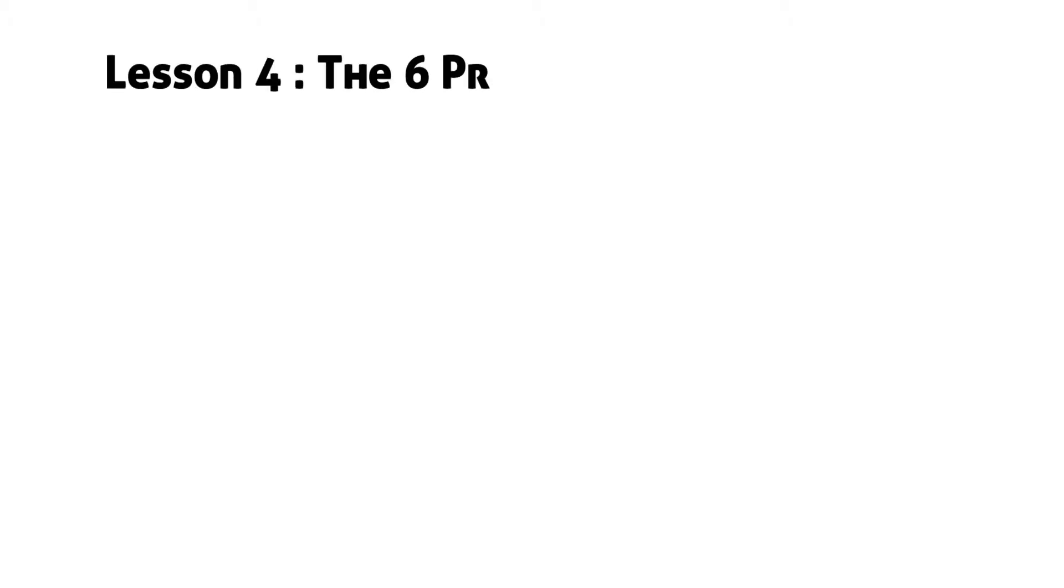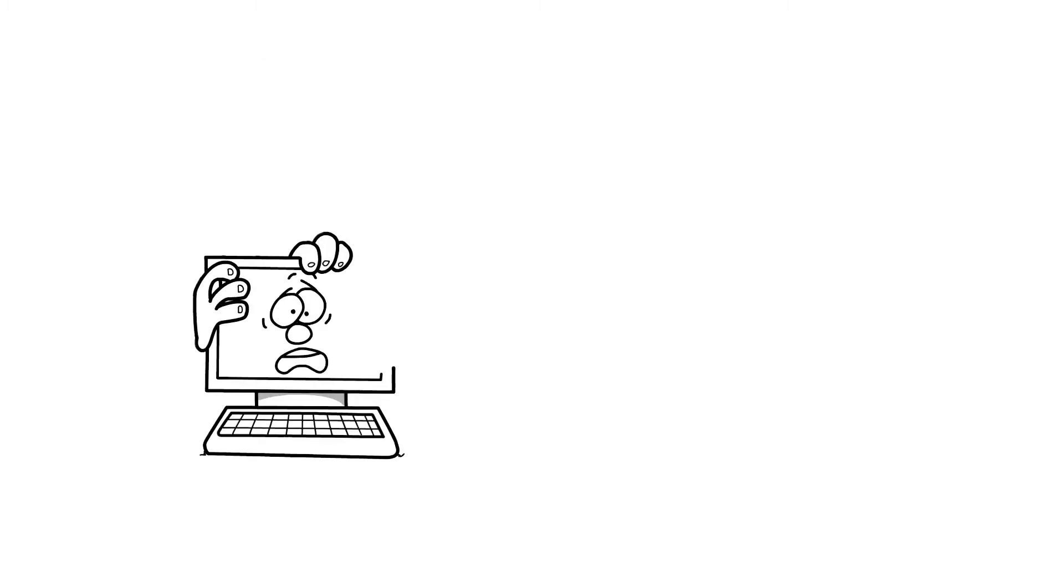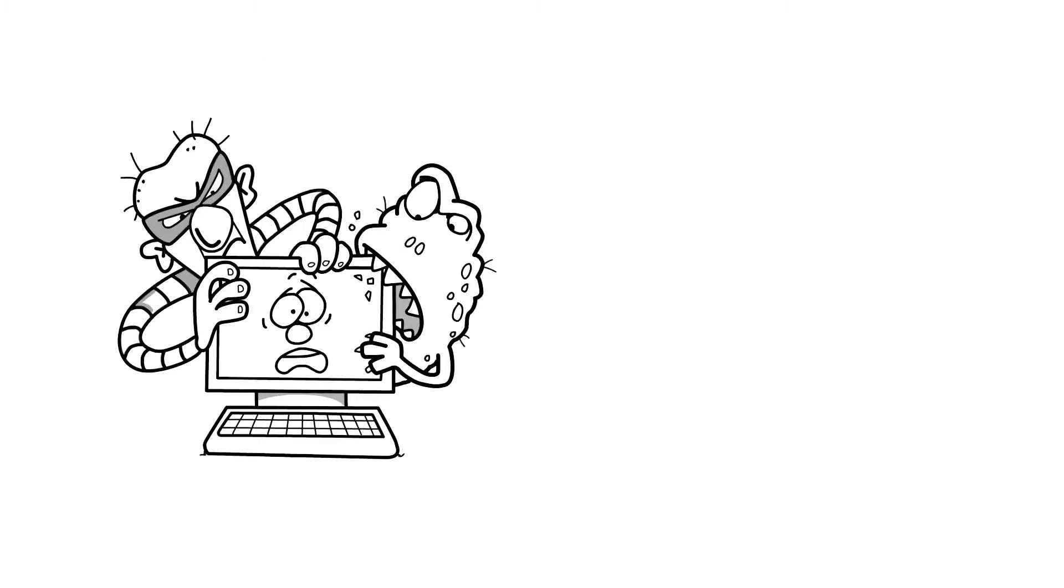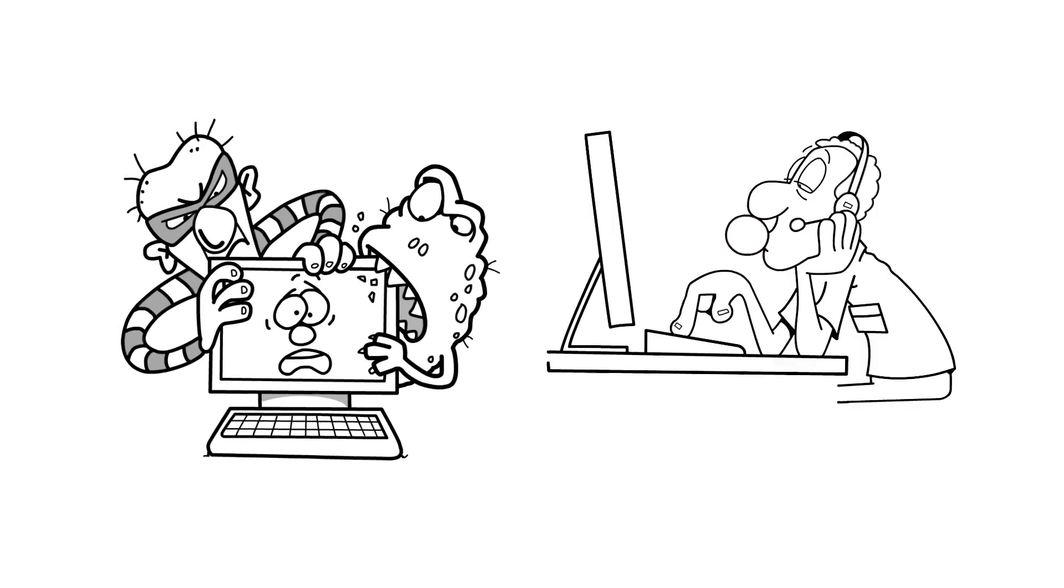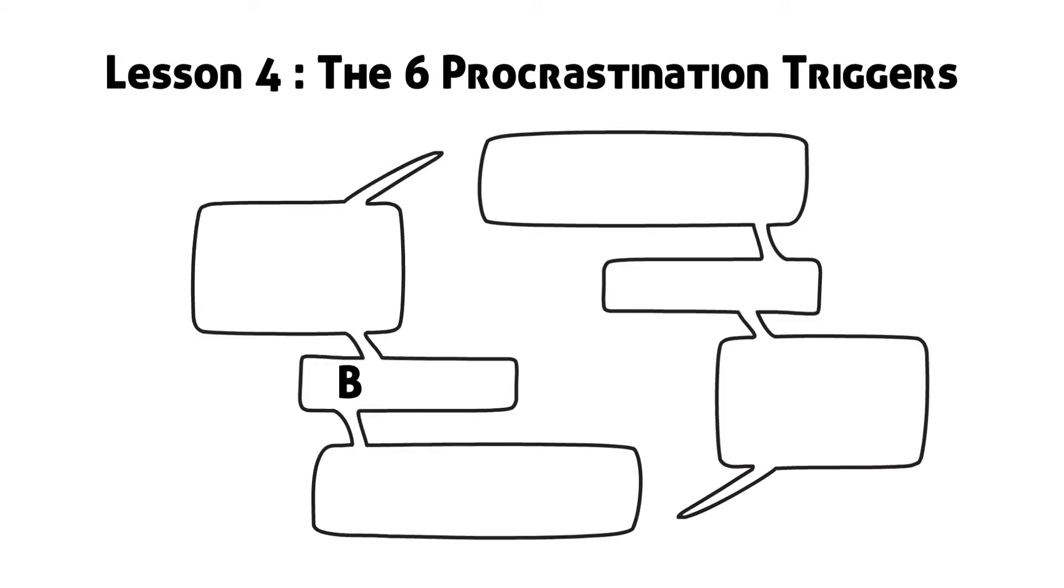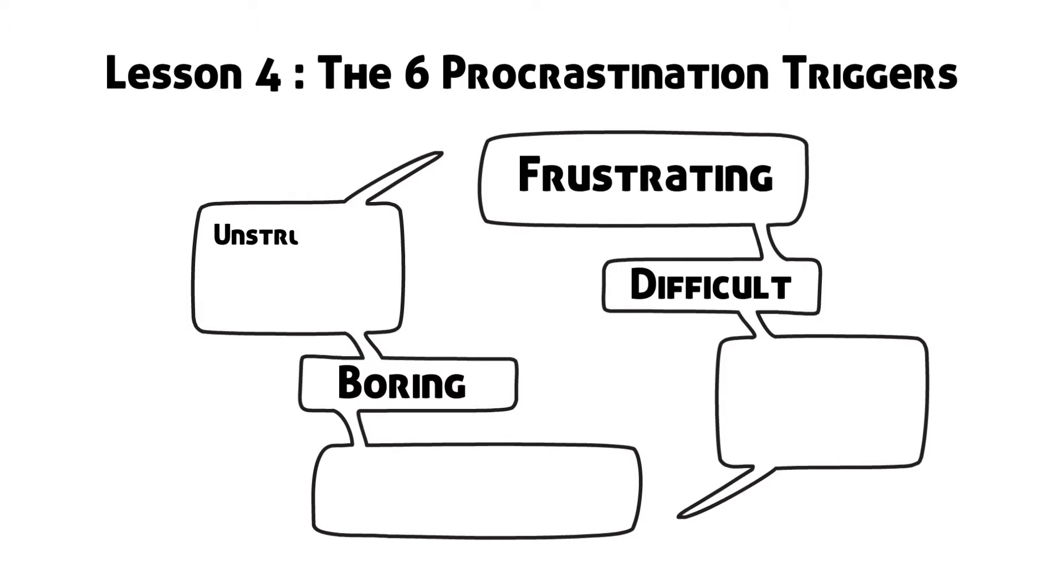Lesson 4 – The 6 Procrastination Triggers. Procrastination researchers have identified 6 particular triggers that contribute the most to making us procrastinate on the task. A task will be aversive if it is boring, difficult, frustrating, unstructured, lacking in personal meaning or lacking in intrinsic rewards such as being fun or rewarding.